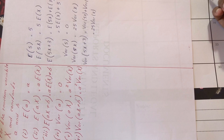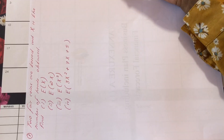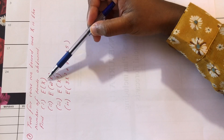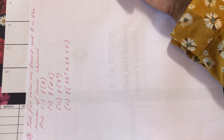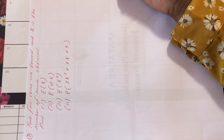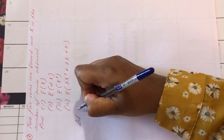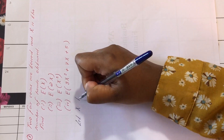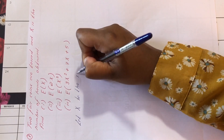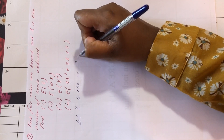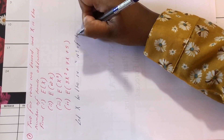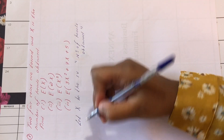We're now going to look at a question where we use this theorem. Two fair coins are tossed and x is the number of heads obtained. Before we can find the expectation, the first thing to do is draw a probability distribution table. Let x be the random variable representing the number of heads obtained.